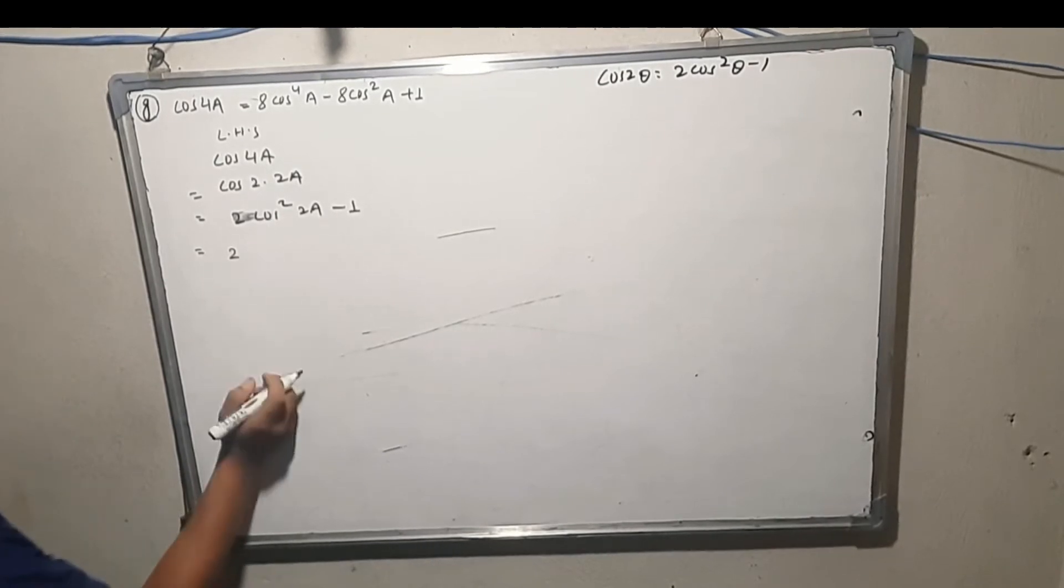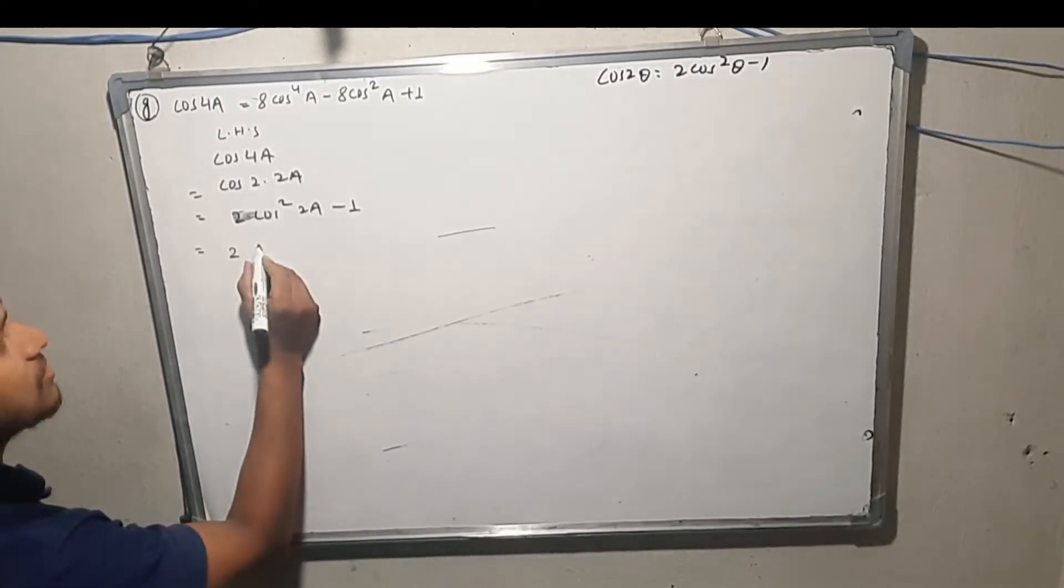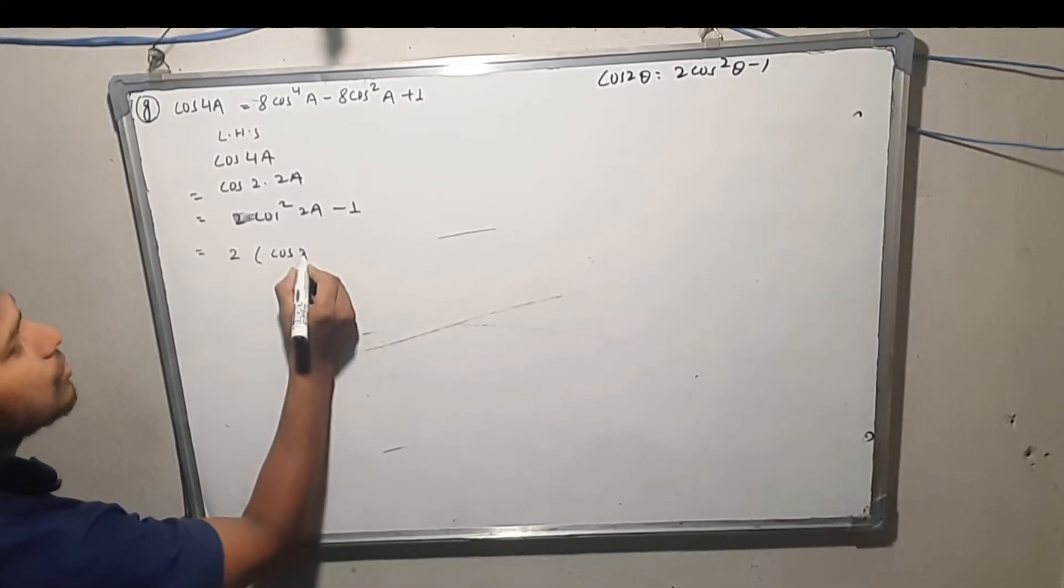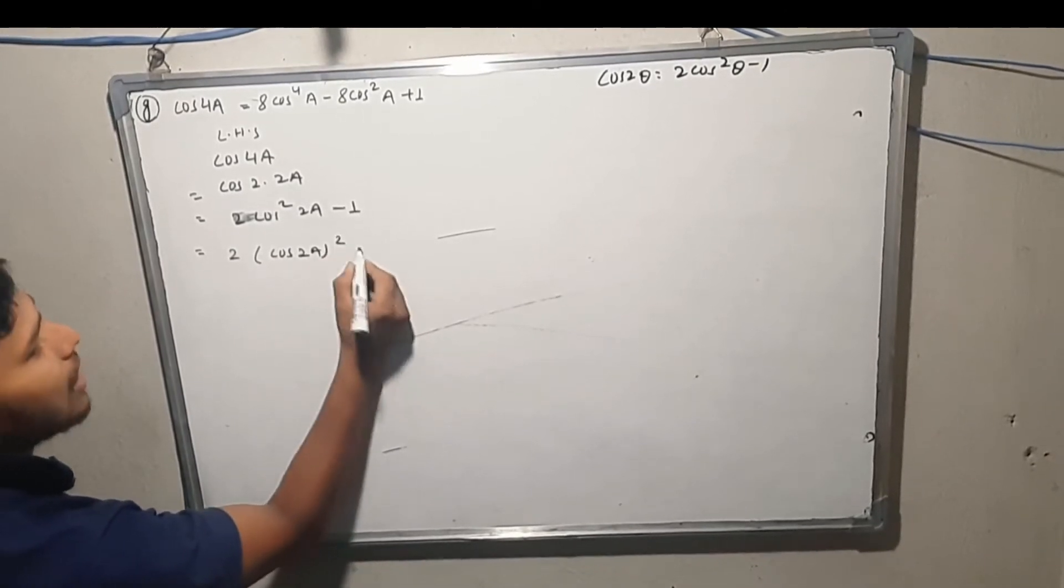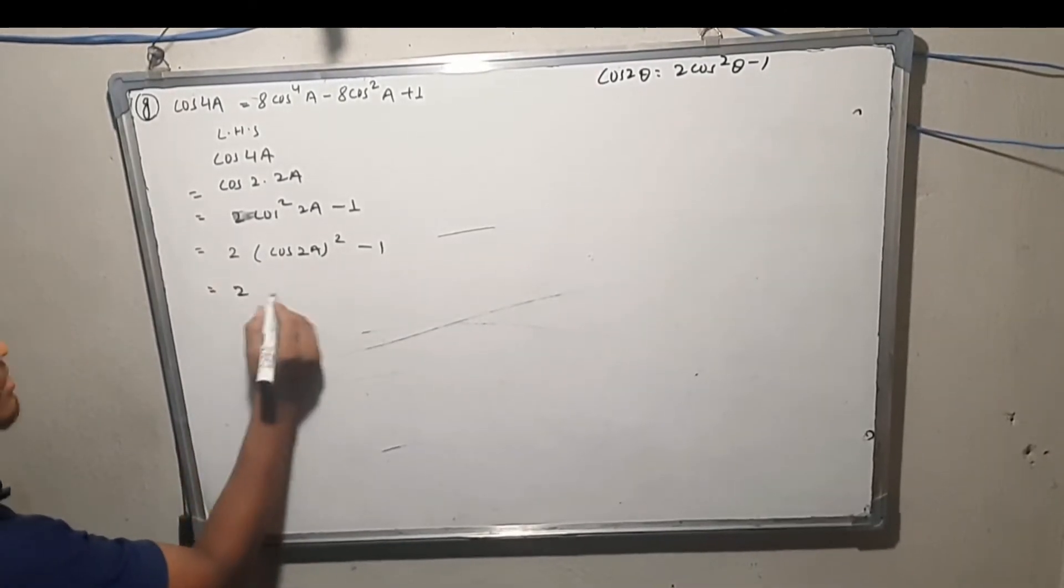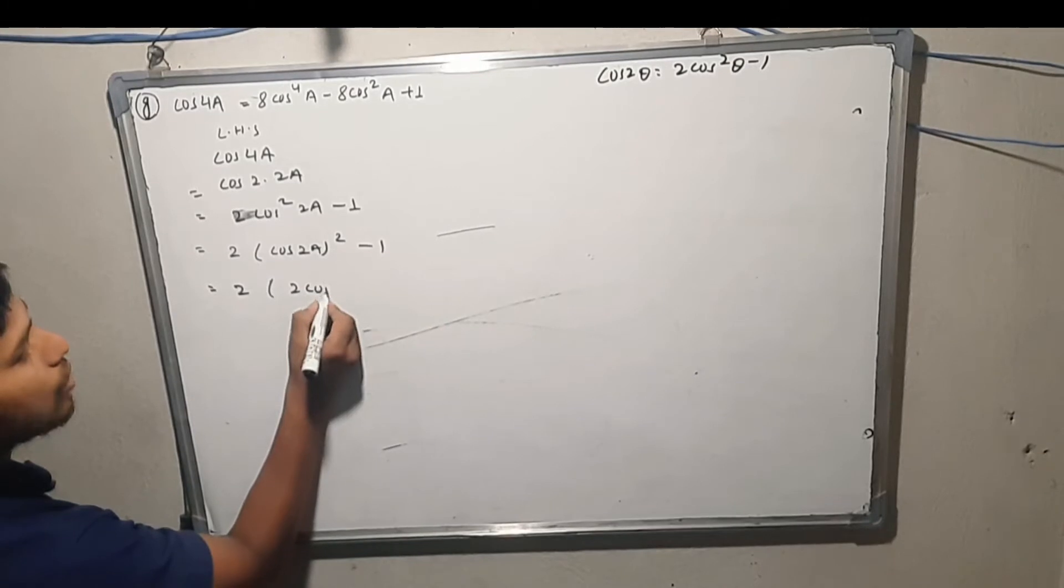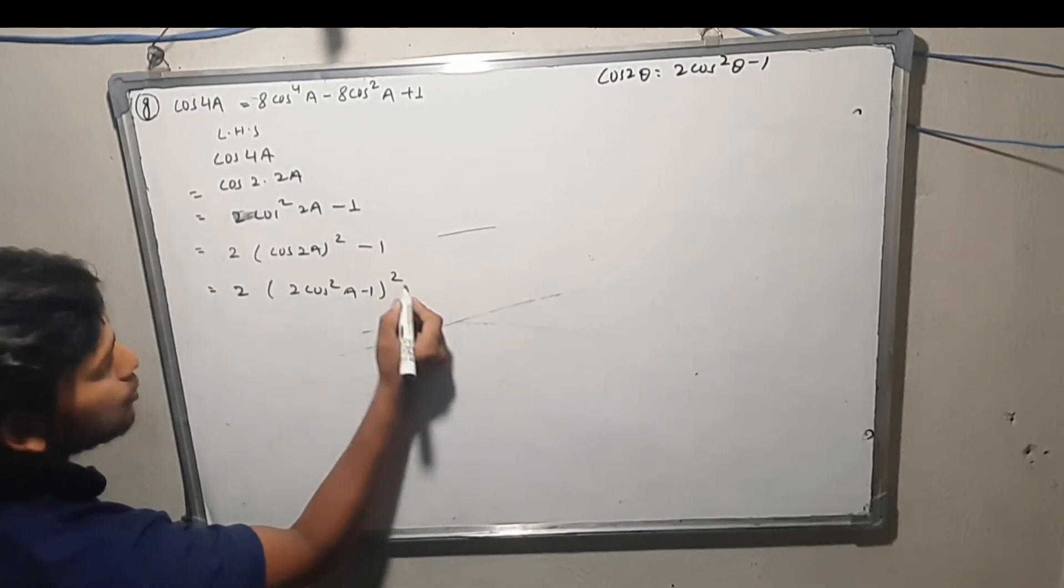If you have 2 cos squared 2a, you can use the formula. Cos 2a to the whole square minus 1. Cos 2a to the whole square.